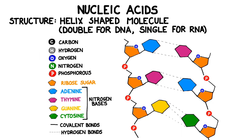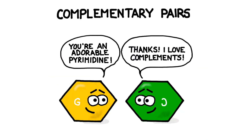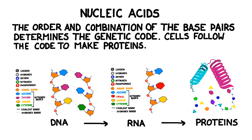Adenine and thymine are connected using two hydrogen bonds and guanine and cytosine using three bonds. We call these sets of nitrogen bases complementary pairs. The order and combination of the base pairs in the DNA molecule determines an organism's genetic code.